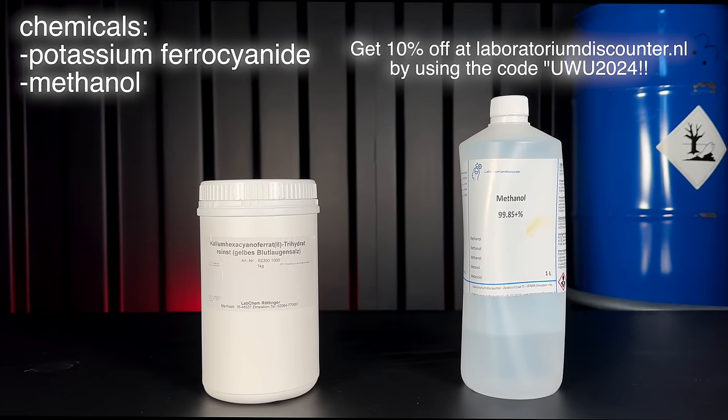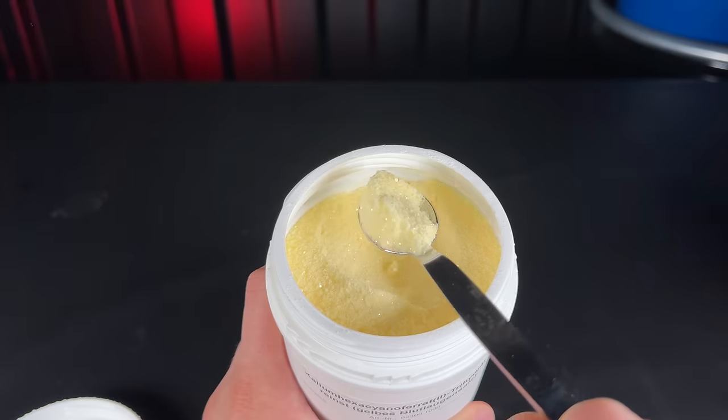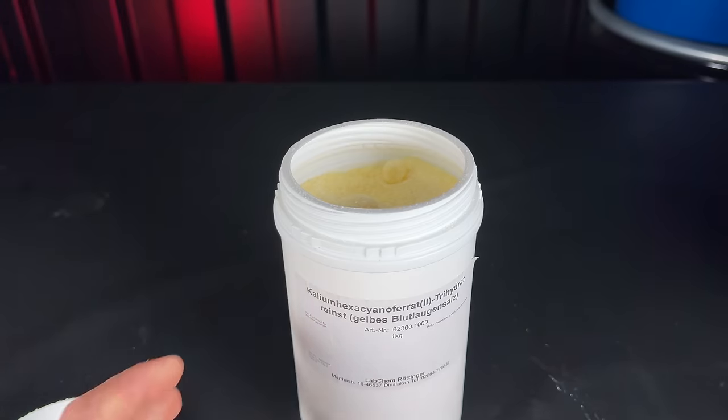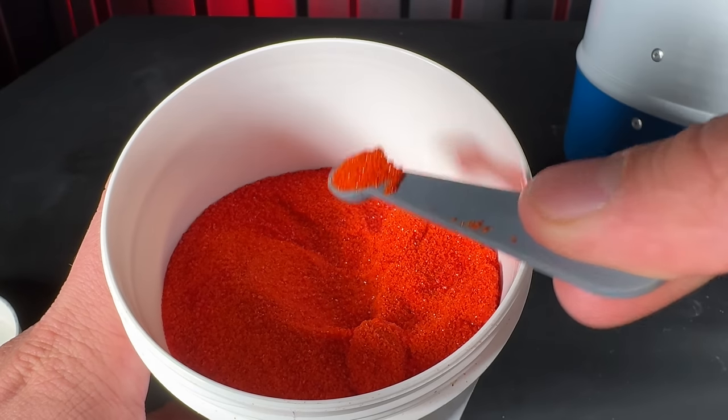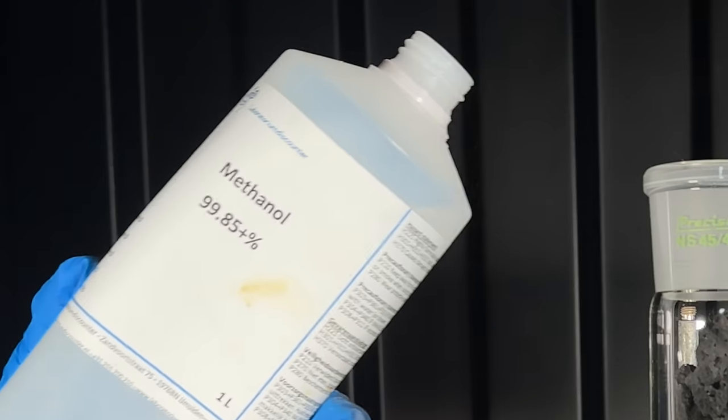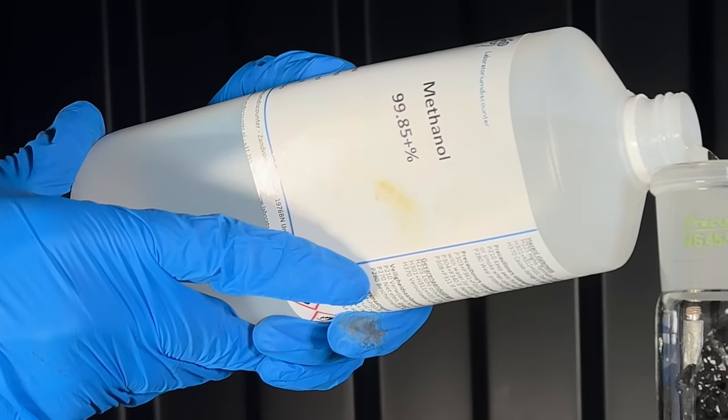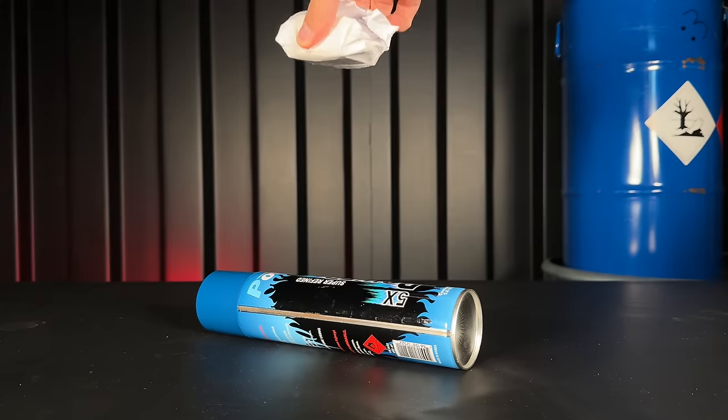What's great about this method is that I only need two chemicals, both easily available and cheap. The first chemical is potassium ferrocyanide, which is this yellow salt. There's also potassium ferricyanide, which is red, but I'm not going to use that. The second chemical is methanol, which is necessary for purification.